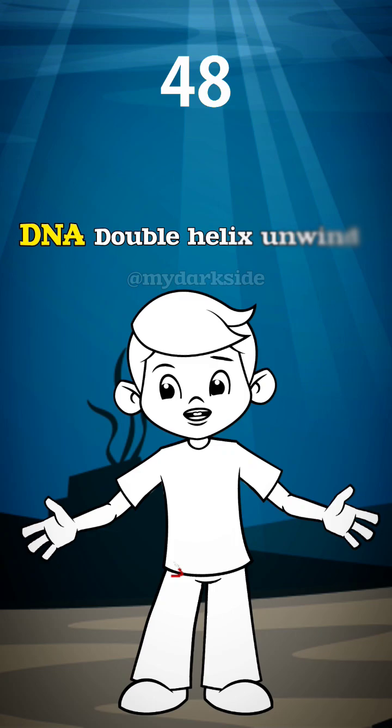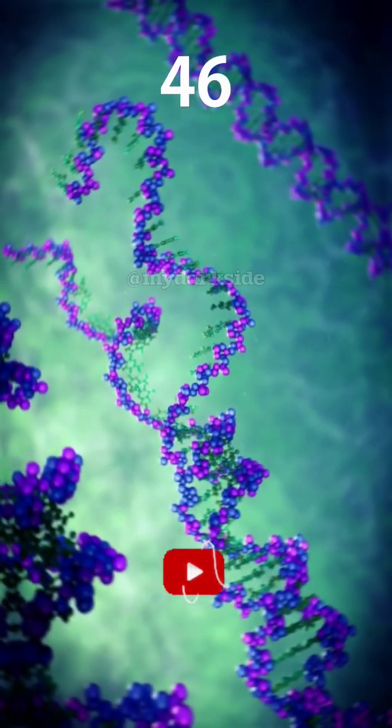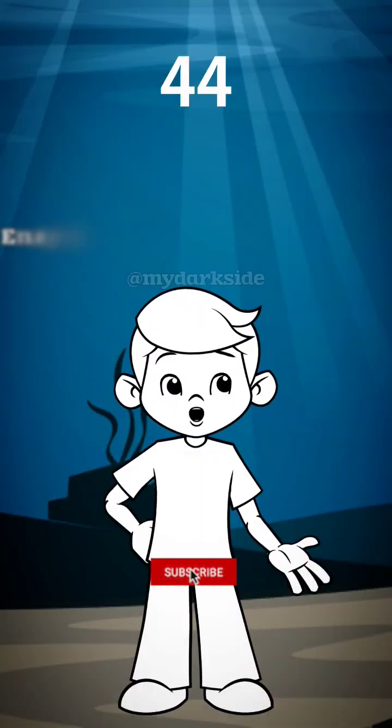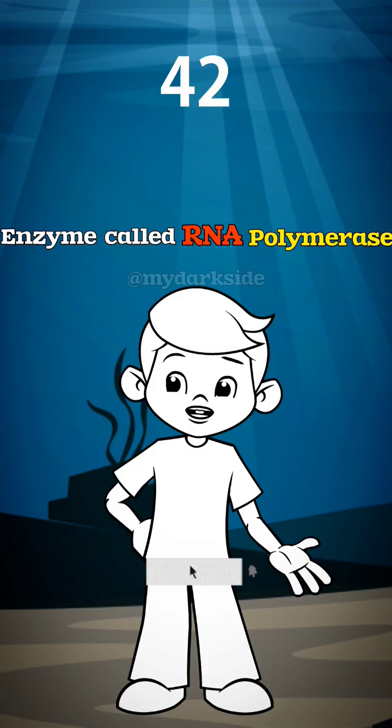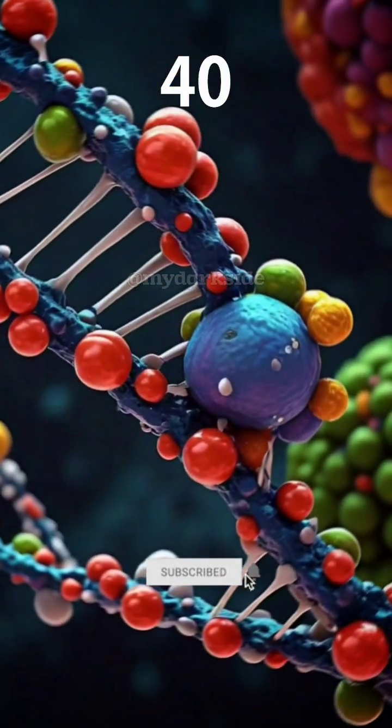First, the DNA double helix unwinds, exposing a specific gene. An enzyme called RNA polymerase attaches to the DNA at the start of the gene.